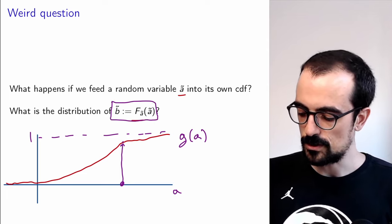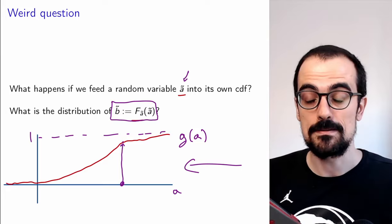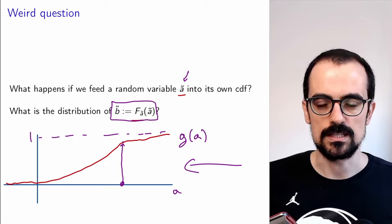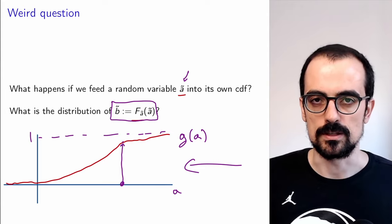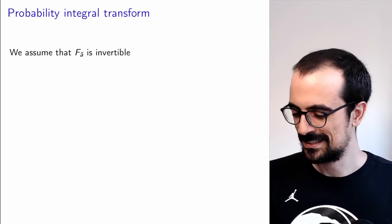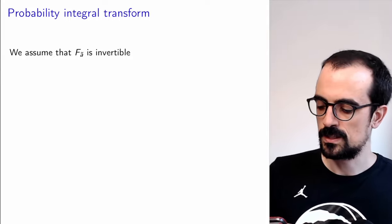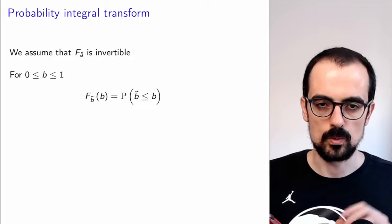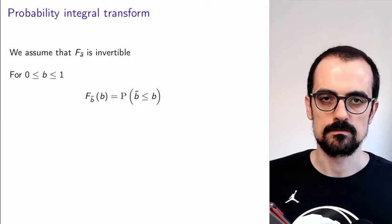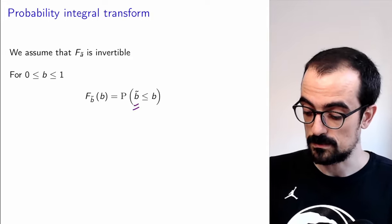So B = CDF(A) means that for every value I get from A, I just plug it into this function. Now how do we derive the distribution of B? We do what we just did for our other examples. We want the CDF of B — and if we want the PDF, we will just differentiate this. By definition, the CDF of B is the probability that the random variable B is smaller or equal to any value on the real line.